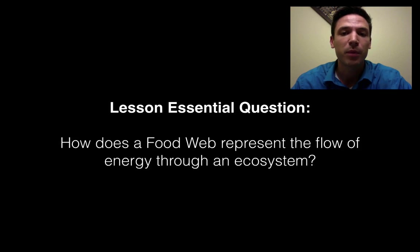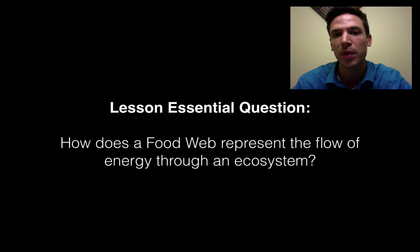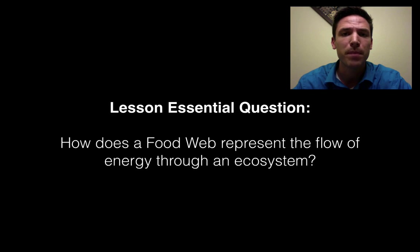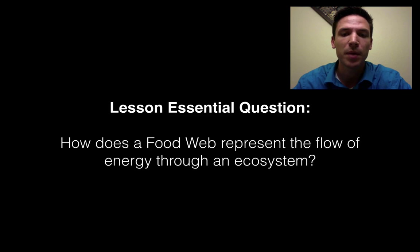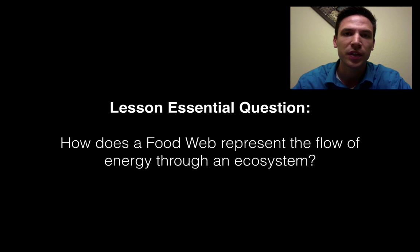That's really it. Going back to our essential question — how does a food web represent the flow of energy through an ecosystem? — you should think about what it means to be a producer, a primary, secondary, or tertiary consumer, what the term trophic level means, and remember the rule of 10: only 10% of the energy moves from level to level. You should also be able to look at a food web, understand how all organisms are connected, and predict how wiping out one population impacts the rest. If you've got that, you've got energy flow in ecosystems. Thanks, guys, and I hope you learned something.